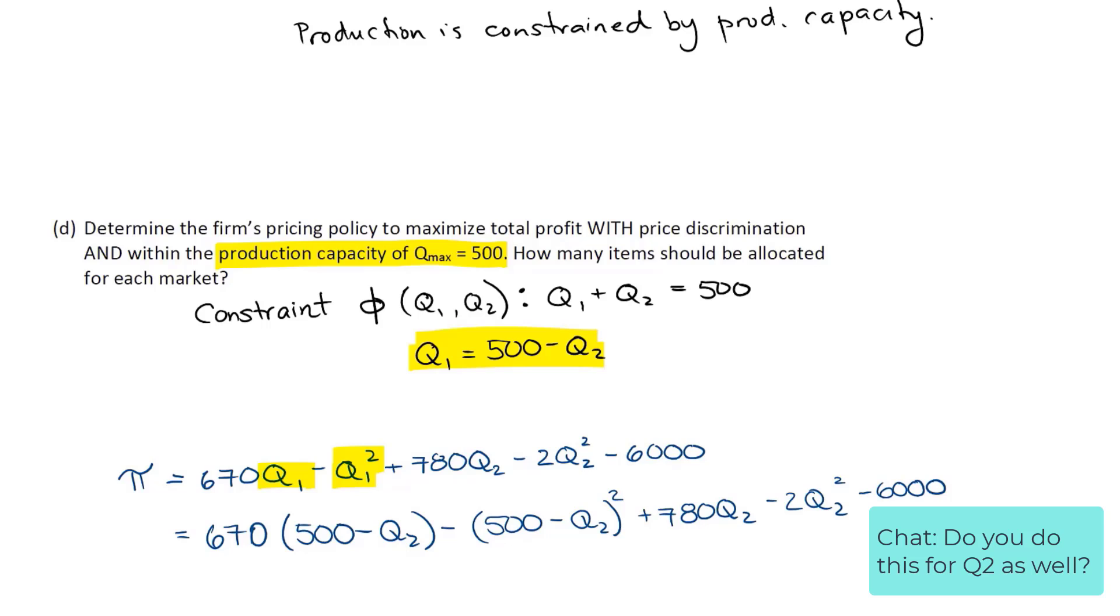Now I don't do it with Q2 as well, because then I'm going to be kind of having a loop going on, and they don't actually end up solving for anything. Basically, it's saying whenever I solve for Q1, it's going to be limited to being 500 minus Q2. And using this substitution, I can now solve for what the optimal Q2 would be.